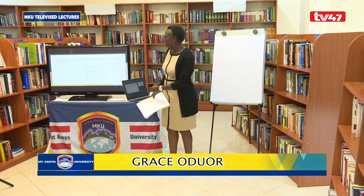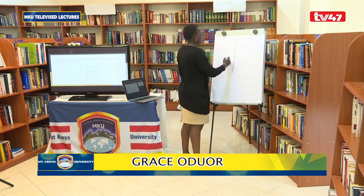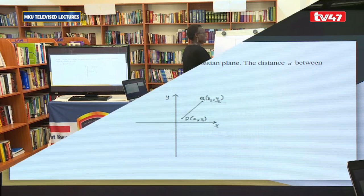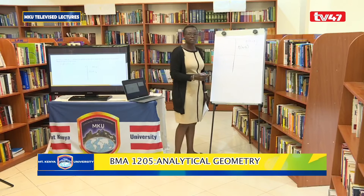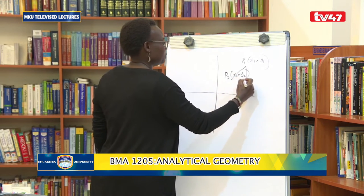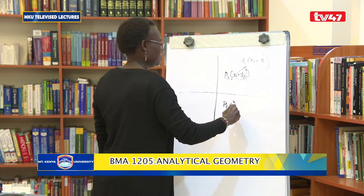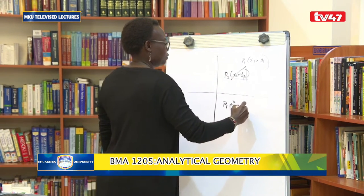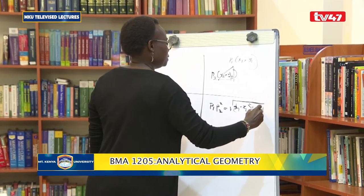We start with the distance between two points on the Cartesian plane. If you're given two points on the Cartesian plane — point P1 with coordinates (x1, y1) and point P2 with coordinates (x2, y2) — and you want to get the distance between these two points, we can get this using Pythagoras' theorem.